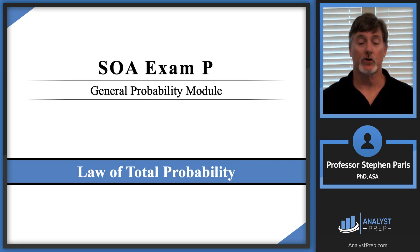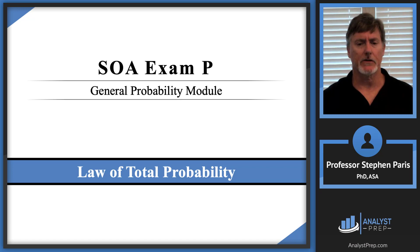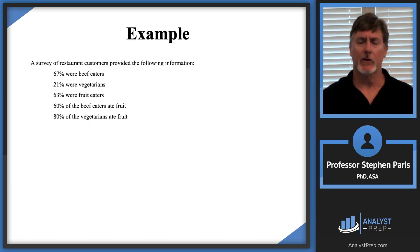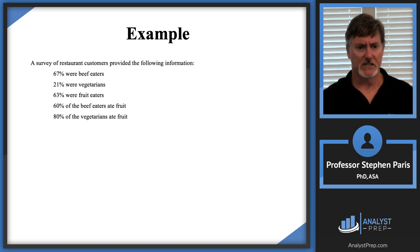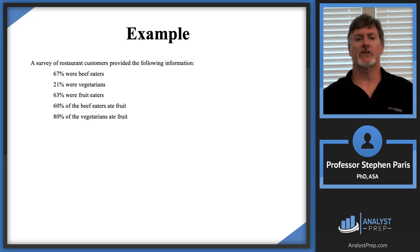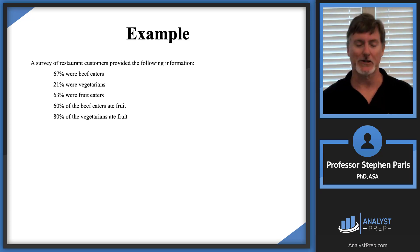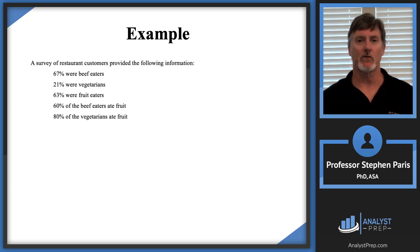In this video we're going to talk about the law of total probability. Before I do that though, I need to discuss another topic related to it, and I'm going to do that through the use of this example. We have a survey of restaurant customers providing the following information: 67% were beef eaters, 21% were vegetarians, 63% were fruit eaters, 60% of the beef eaters ate fruit, and 80% of the vegetarians ate fruit.